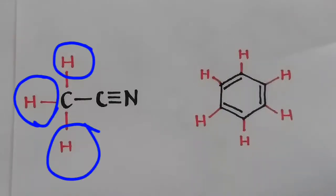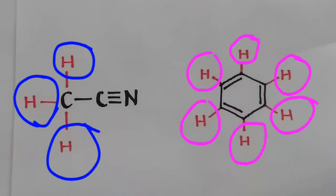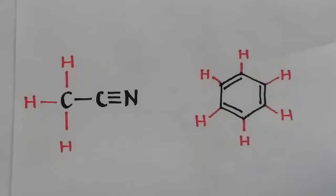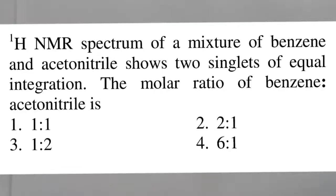Since acetonitrile has three hydrogens compared to six hydrogens of benzene, just taking double moles of acetonitrile than benzene is the answer. Hence, one mole of benzene and two moles of acetonitrile is the right choice and option C is the right answer.